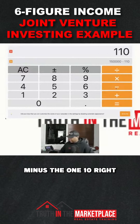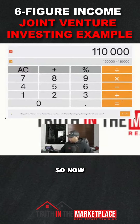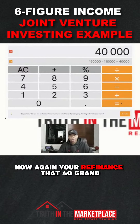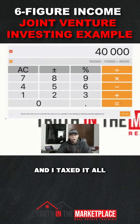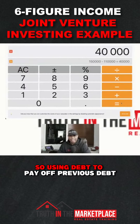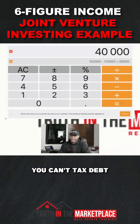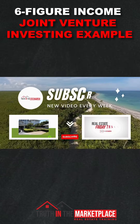So $150,000 minus $110,000 — there's a $40,000 profit. Now, you're refinancing that $40,000 and it's not taxed at all, because it's debt. You're using debt to pay off previous debt, and you can't tax debt.